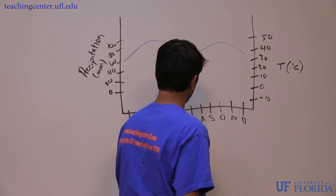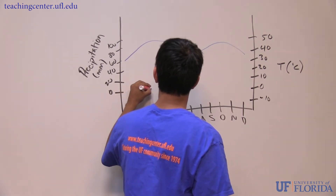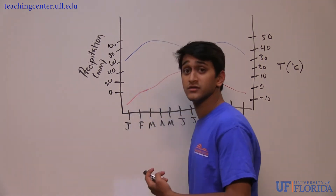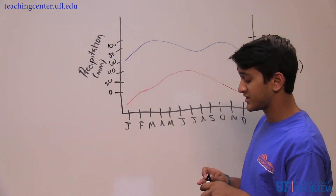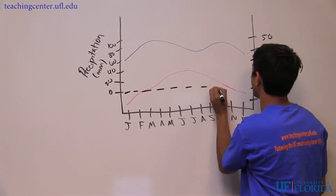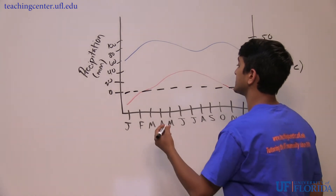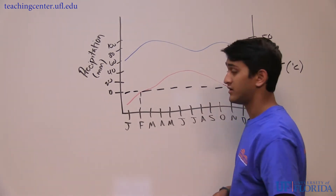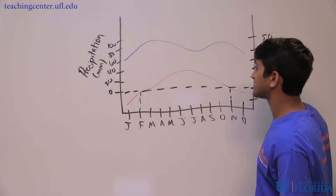These diagrams have two curves: one usually blue representing precipitation, and one usually red representing temperature. When the precipitation line is above the temperature line and the temperature is above zero, a biome can support growth. In this particular biome, which is a temperate forest, the growing season is from February all the way to November — most of the year. It's important to evaluate each line separately on its own axis because the values can vary greatly.